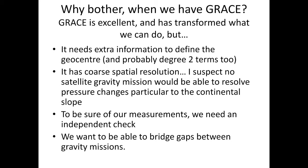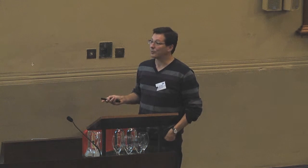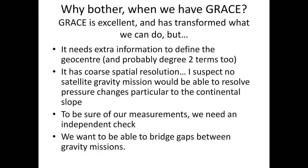Why would we bother to do this? It seems very difficult when we have GRACE. Well, GRACE is brilliant. I don't want to say anything against GRACE. I wouldn't want people to stop flying GRACE-type machines, certainly. But, it's not perfect. It does need extra information to define the geocentre and probably degree 2 terms as well, the very largest scale patterns. Also, the smallest patterns are missing. It has very coarse spatial resolution. And from the point of view of monitoring many of these ocean things, you really want to target those continental slopes, very narrow regions when you're looking down. GRACE can't resolve that, and I doubt any satellite will be able to resolve that. But also, as Gary pointed out on the tide gauges, we want an independent check of what we're measuring. And we also want to be able to bridge gaps between gravity missions. We want a separate system.